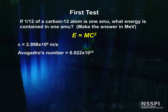You know why — because 12 grams of carbon-12 is one mole, and one mole has 6.022 times 10 to the 23rd carbon-12 atoms. Got it.